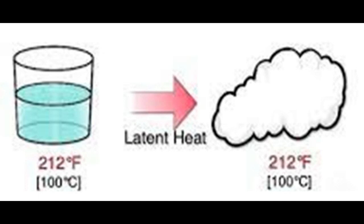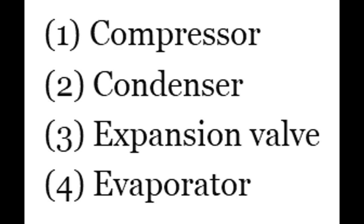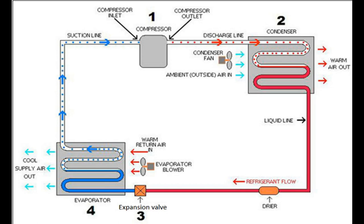The refrigeration cycle explains what is happening to the AC refrigerant in each of the four components within the system. The vapour compression refrigeration system consists of: 1) compressor, 2) condenser, 3) expansion valve, and 4) evaporator. The compressor is the heart of the vapour refrigeration system cycle. The low pressure, low temperature vapour refrigerant gas enters the compressor through the suction line from the evaporator.